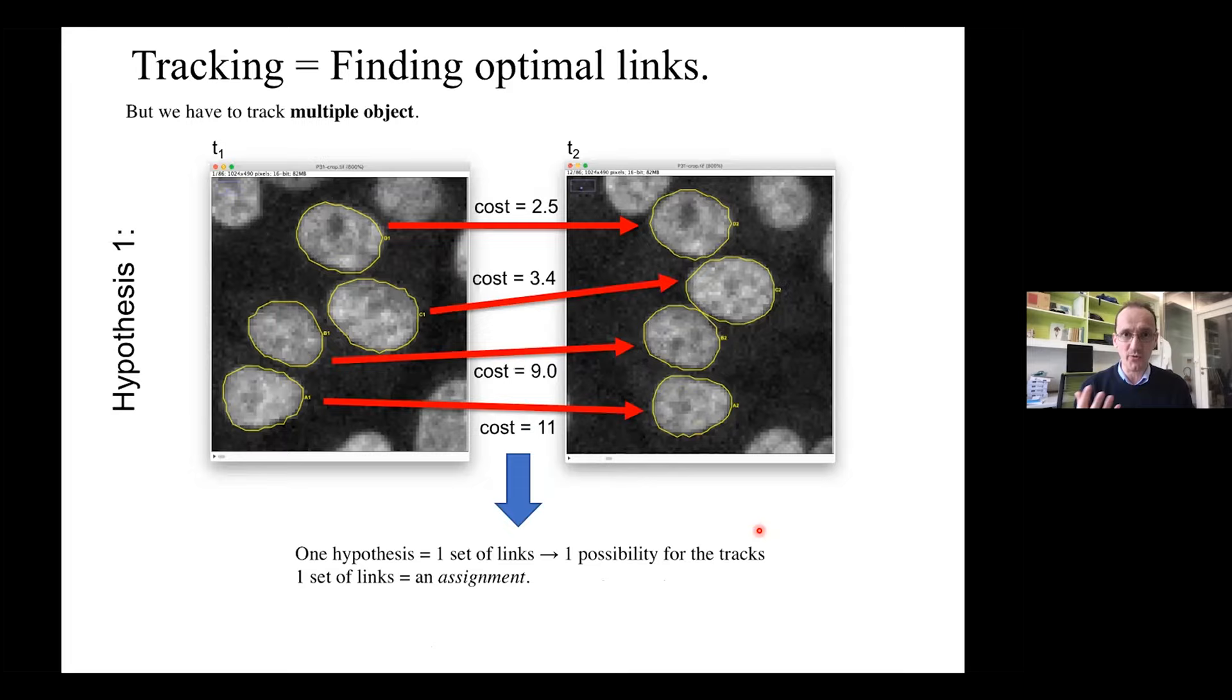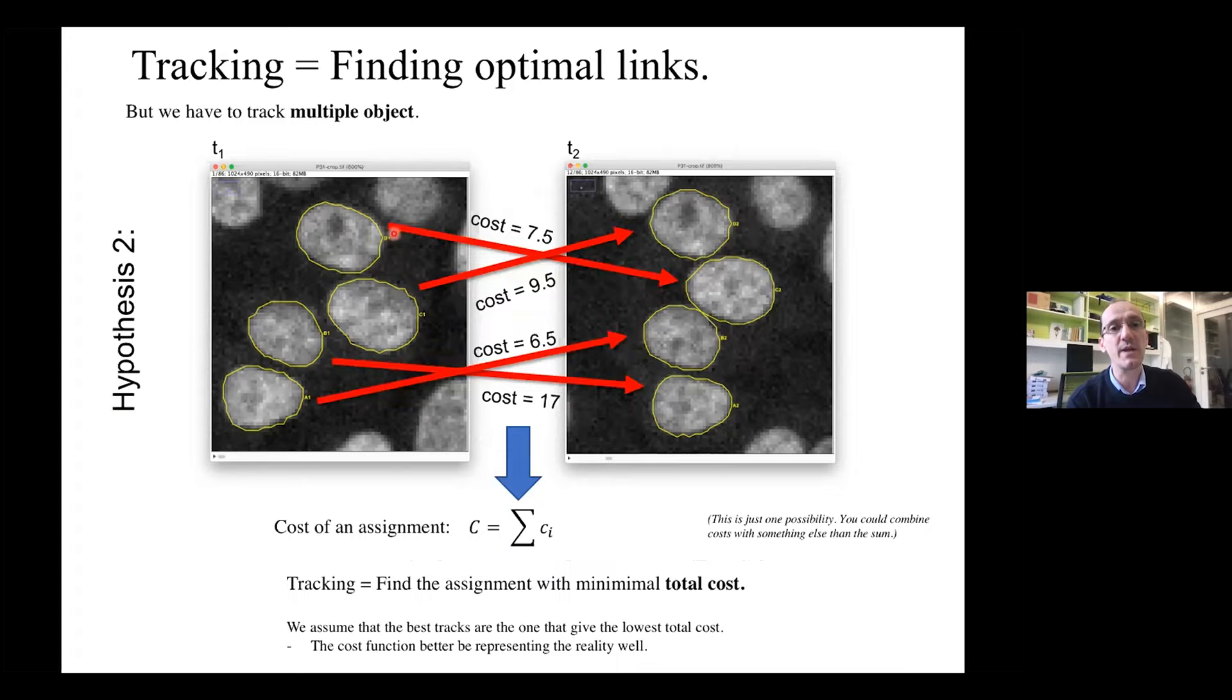You could also use the object fluorescence intensity. If your object will not change intensity over time, you may want to penalize linking objects where the fluorescence changes a lot, because this is unlikely to be the same object. Or if you have a motion model, you know your object moves with constant velocity, almost in a straight line, like when transported along microtubules, and you can make a cost which is very high if the position deviates from the position you can infer from the previous ones. So you mix that together and create a cost function that assigns a scalar positive real value to these links. This construction is a mathematical way of encoding your a priori knowledge about the biology.